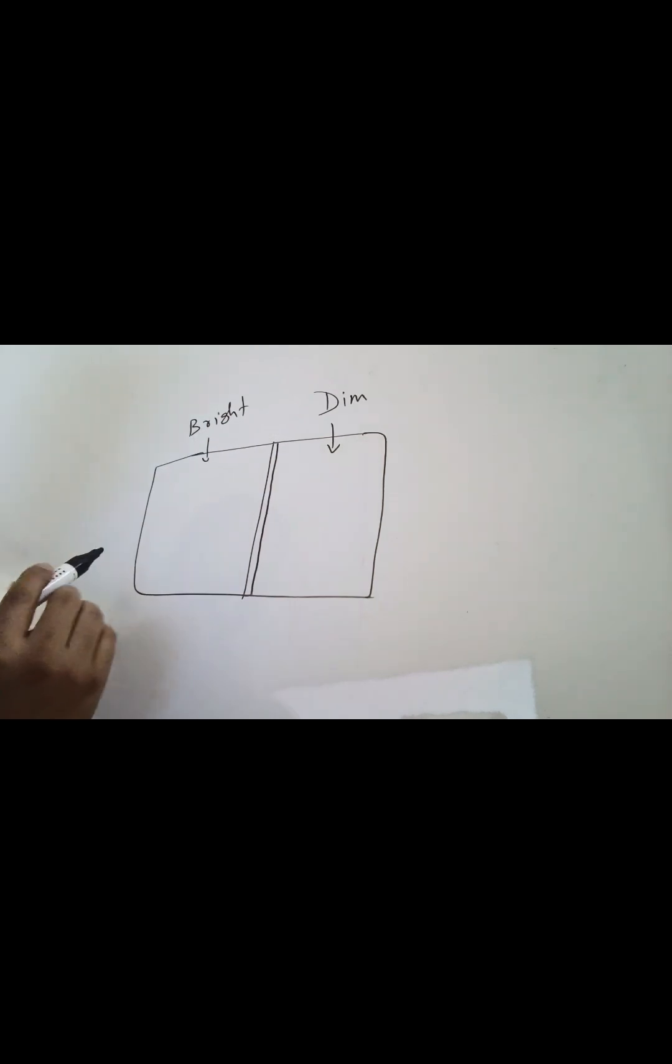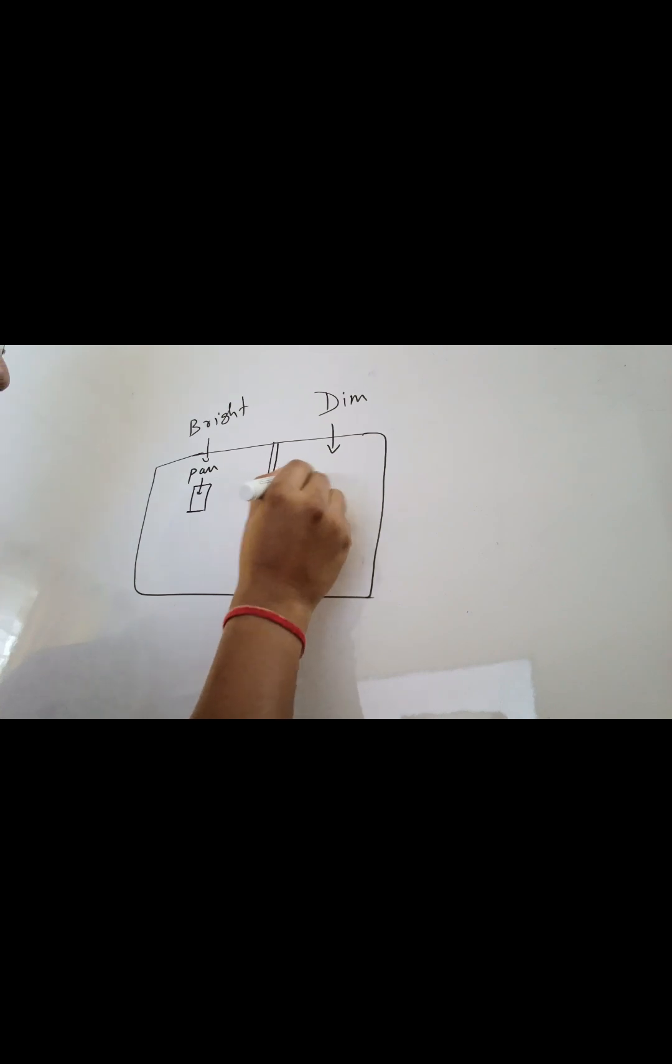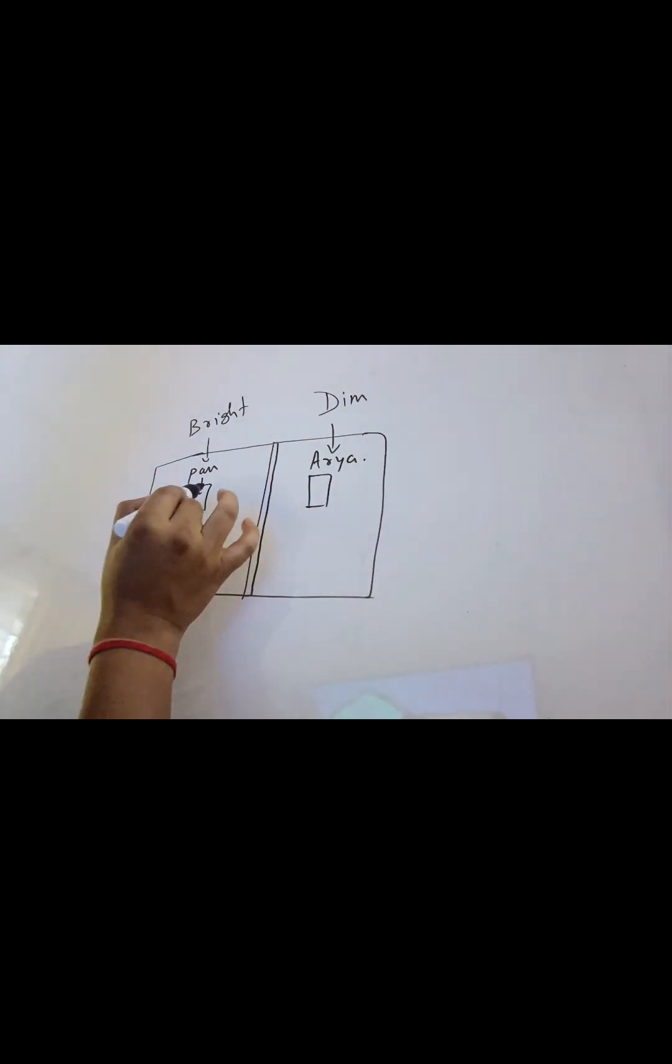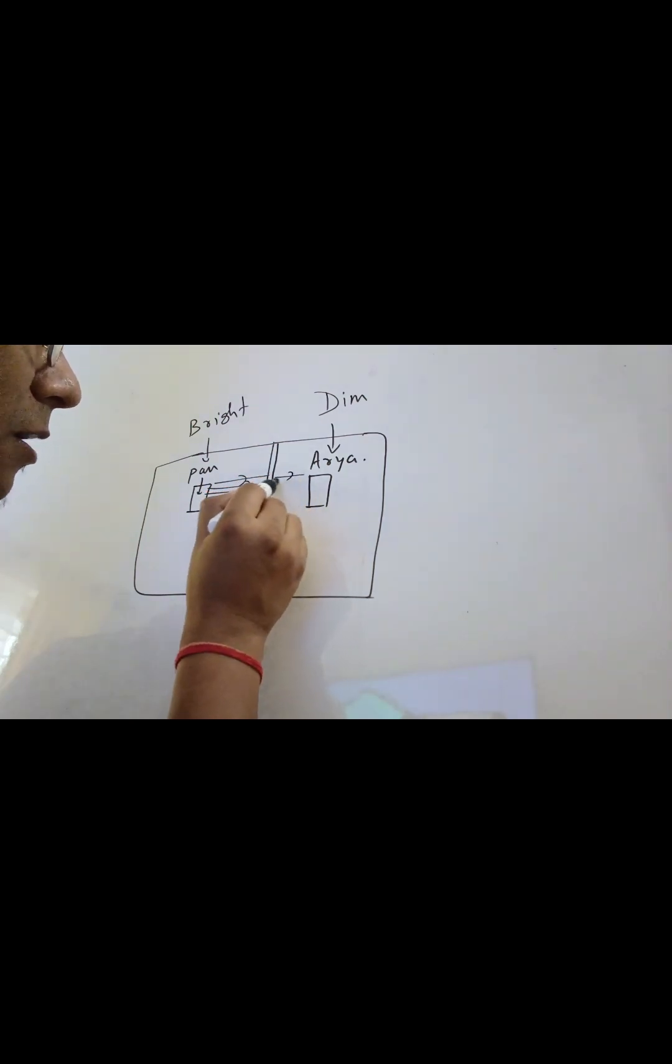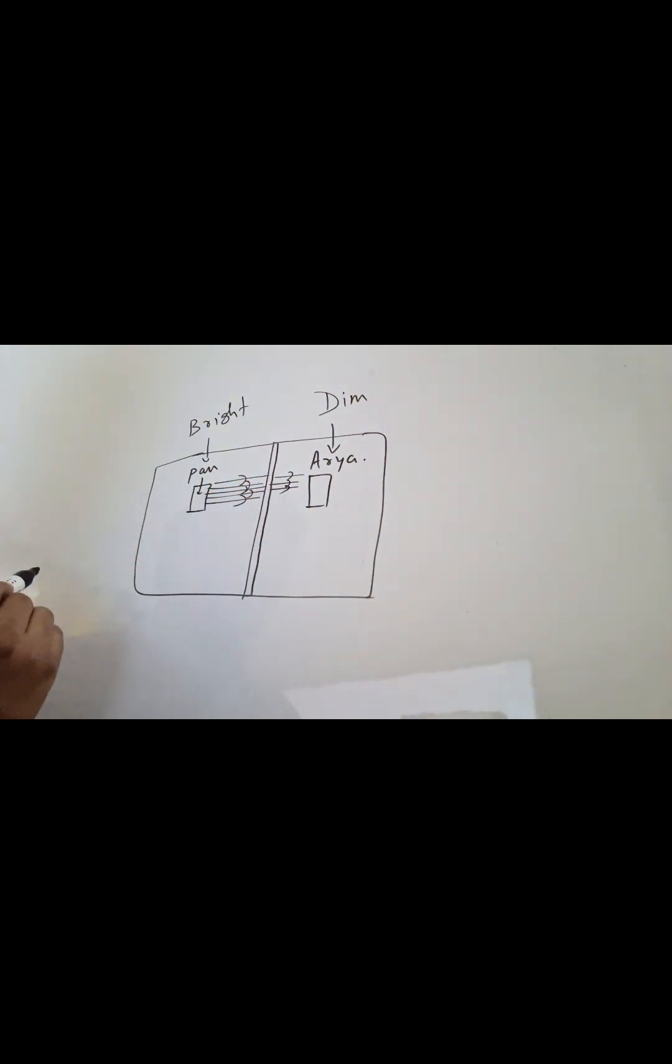So one part, one side of this mirror should be very very bright and one side of the mirror should be very dim, less bright. So now let's say here Pankaj sir is there and here my son Arya is there. So now see what happens. So let's see, this is very very bright, what happens? A lot of light is coming from Pankaj sir's side. So this light has the information about my face, right?